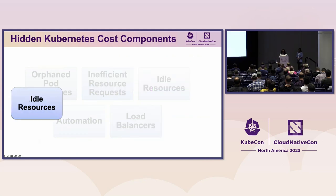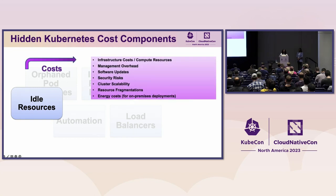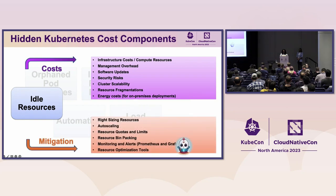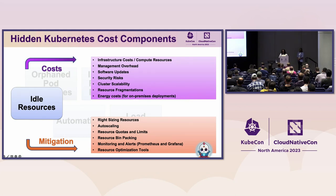Next is idle resources. Even when resources are not actively used, you still need cluster administrators to monitor, patch, and ensure the health of those idle resources. Keeping Kubernetes software, nodes, node operating systems, and container runtimes up to date is essential for security and ensuring the stability of your pods. Running updates on idle nodes still incurs costs — this goes back to the recurring theme of hygiene and maintenance.